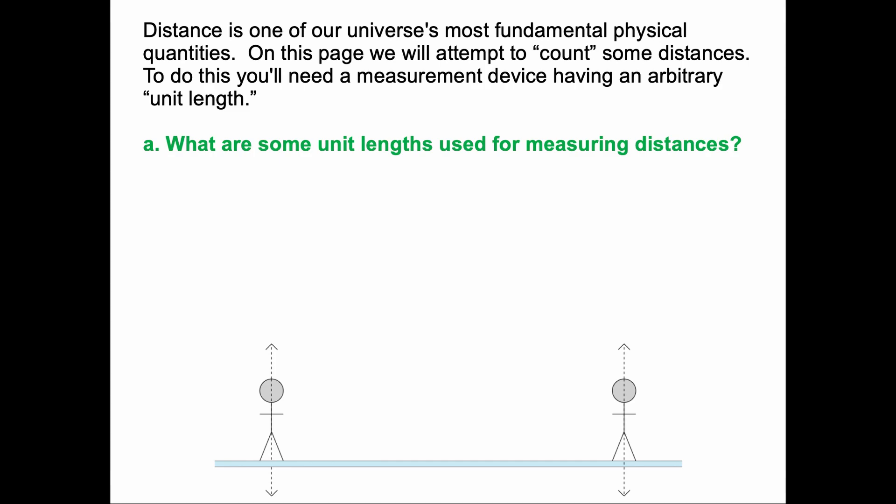Units of the past were based on the human body. For example, people might have used the length of their feet to measure things. We still use the foot today, although it's been standardized. The cubit was the length of a person's forearm from the elbow to the fingertip, and paces would be the length of a stride that a person generally makes. But those things could vary quite a bit in length.